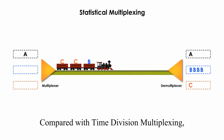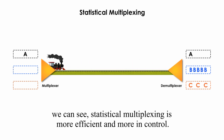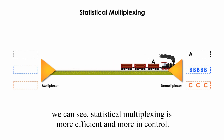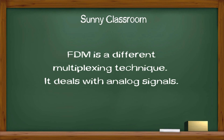The multiplexer decides to give user B the most time slots and the least time slots to user A. Compared with time division multiplexing, we can see statistical multiplexing is more efficient and more in control. FDM is a different multiplexing technique — it deals with analog signals, not digital signals.